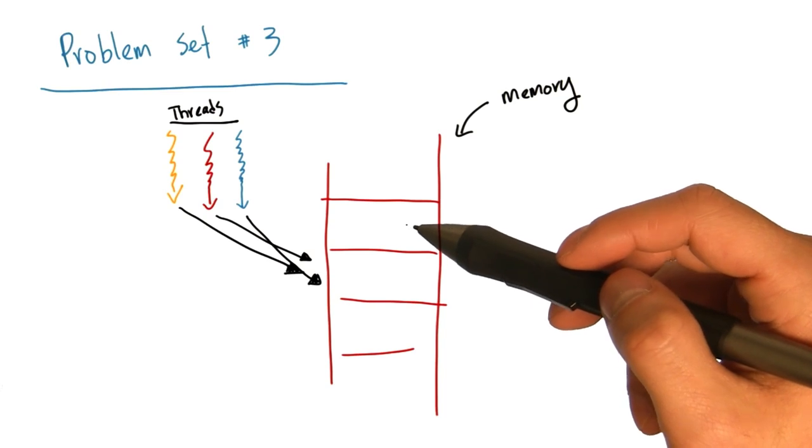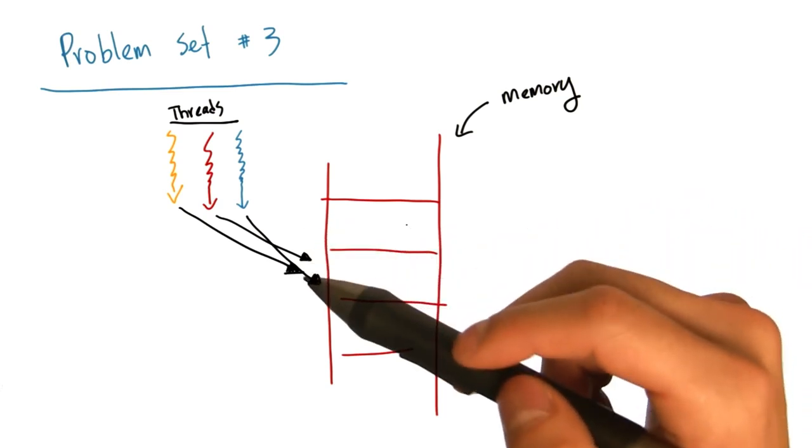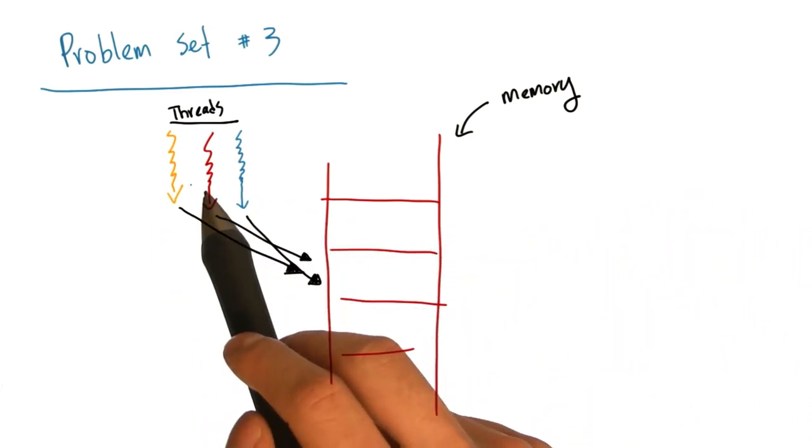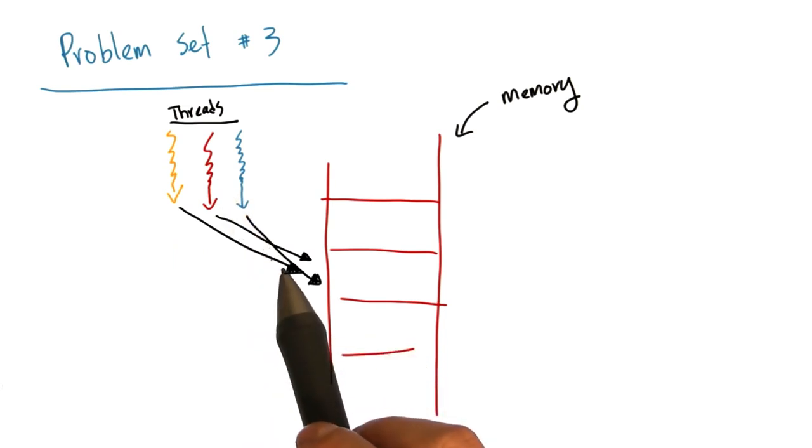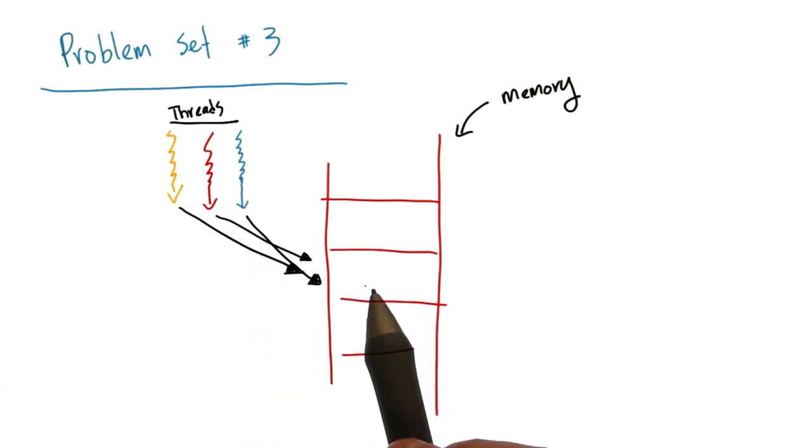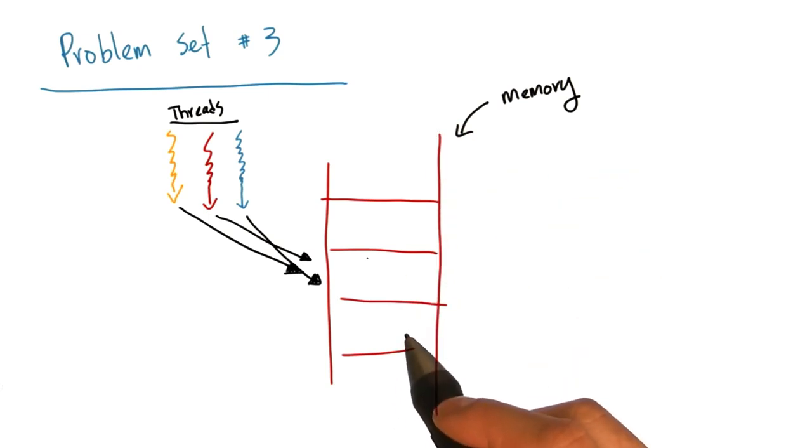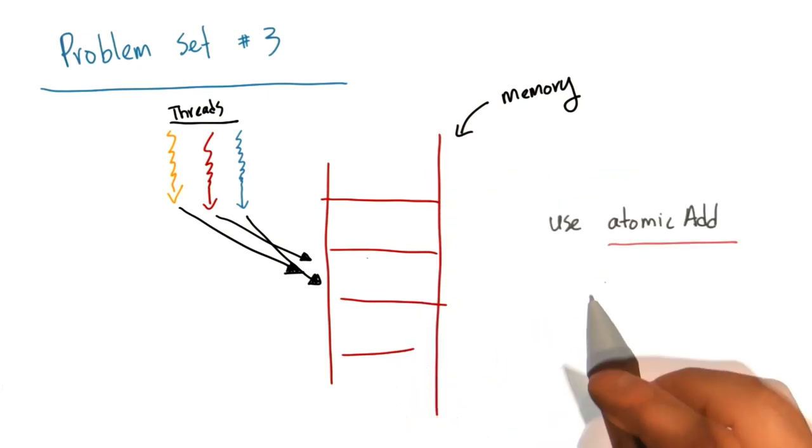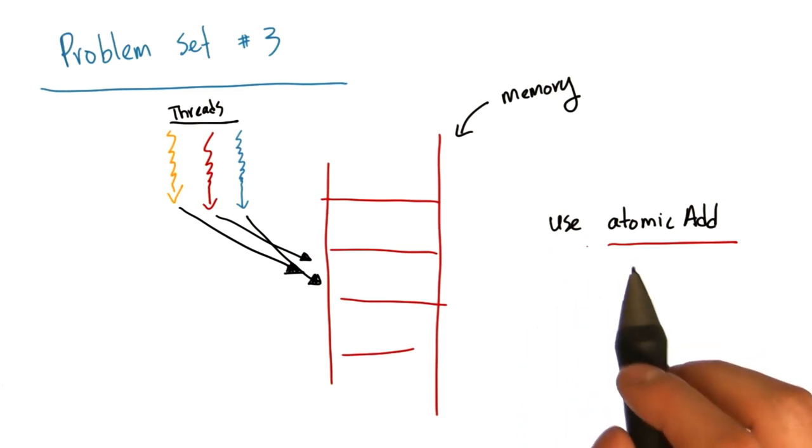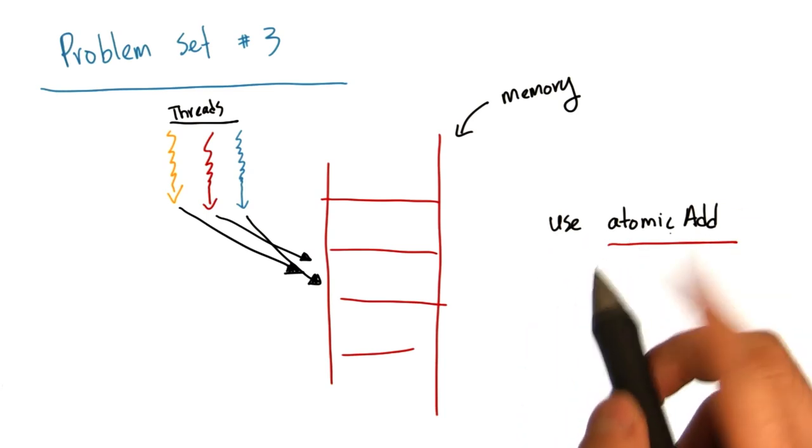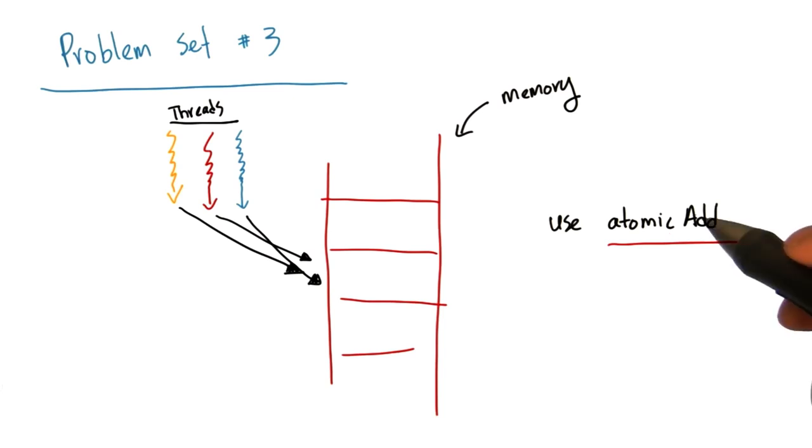When computing a histogram in parallel, it is very likely that different threads will try and update the same memory locations at the same time. To correctly handle this parallel data scattering requires special care. For now, we recommend that you use the atomic add function when computing your histogram.